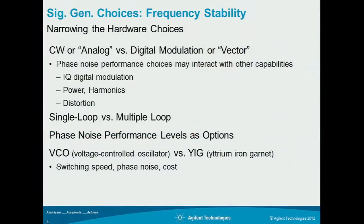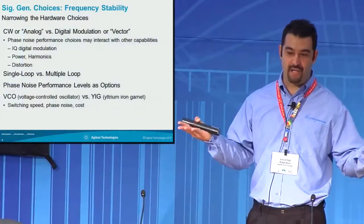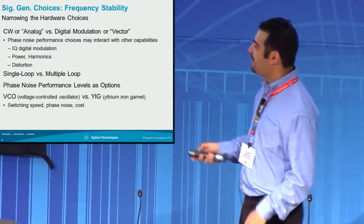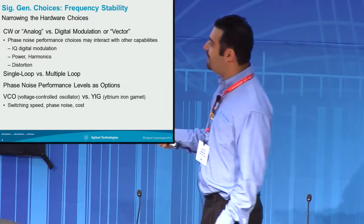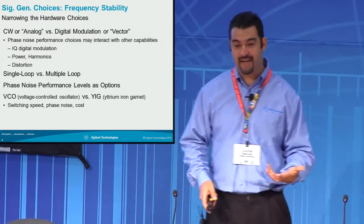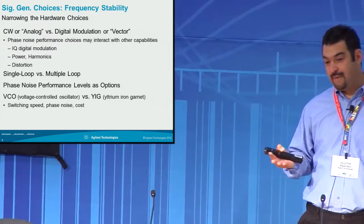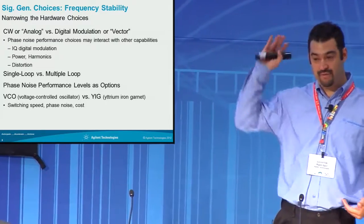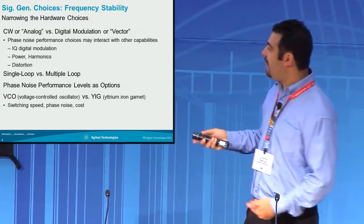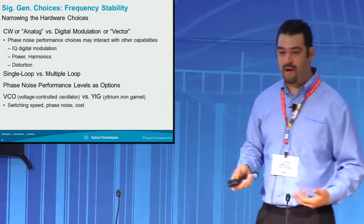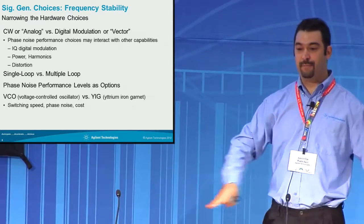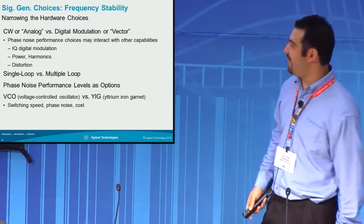When you go to digital modulation, typically you have IQ modulators. The IQ modulator is usually broadband, so that has a tendency to degrade the broadband noise. Also, depending on how your front end is optimized — maybe you're optimized for more linearity — but in terms of CW operation, maybe you just want to operate at max power. In that case, you're willing to trade off maybe harmonics for improved broadband noise.